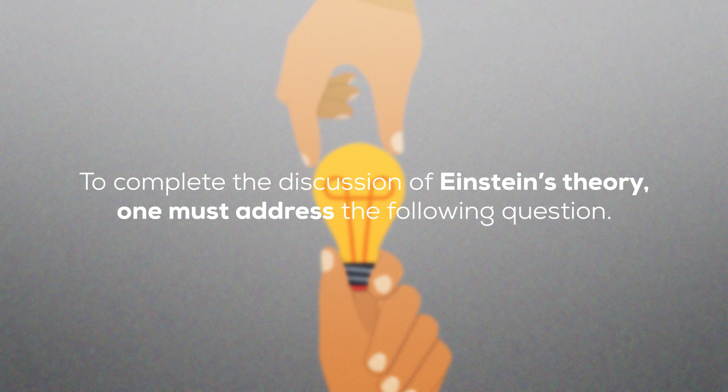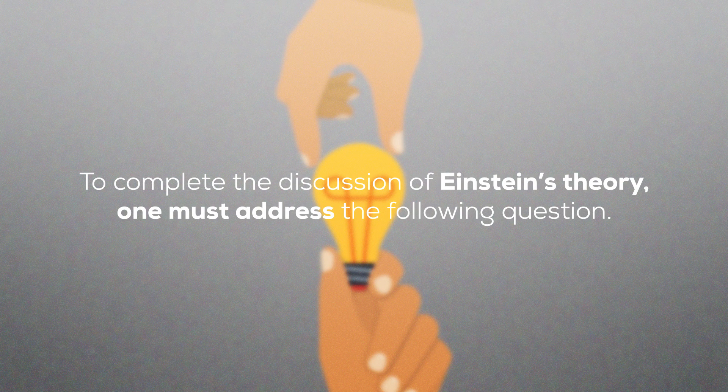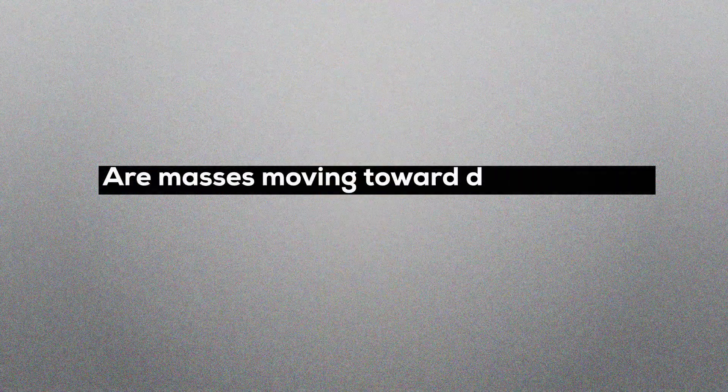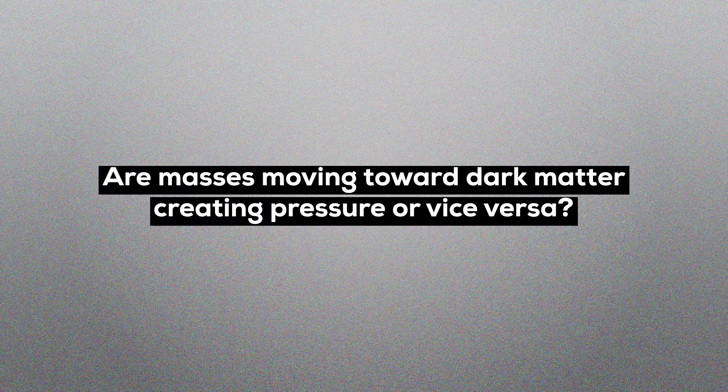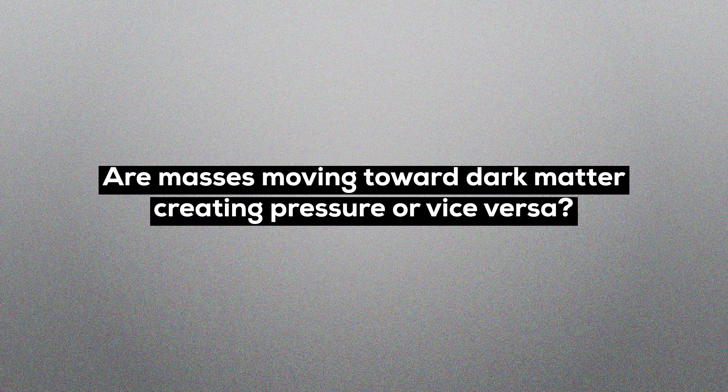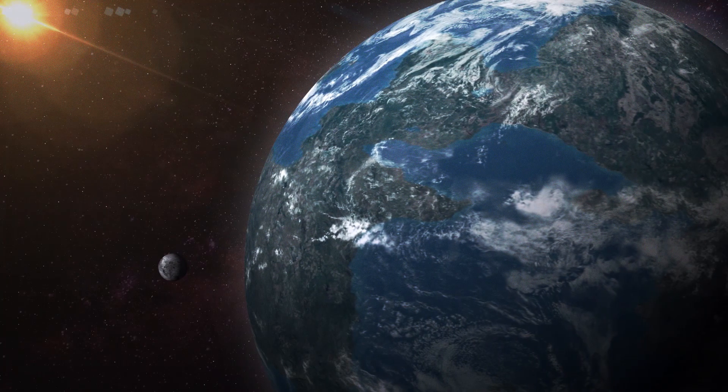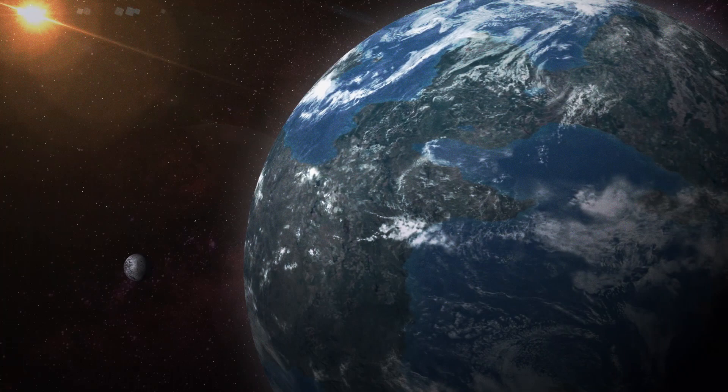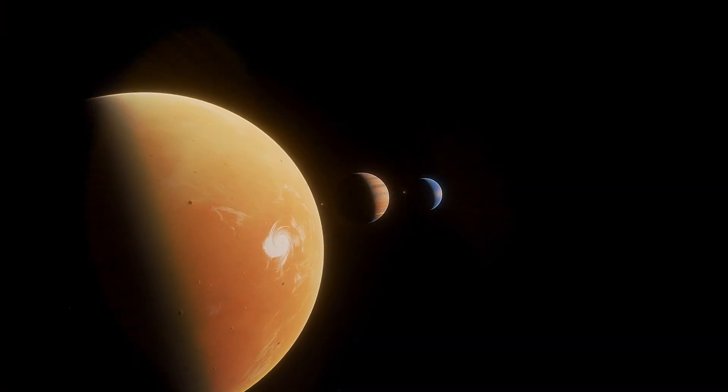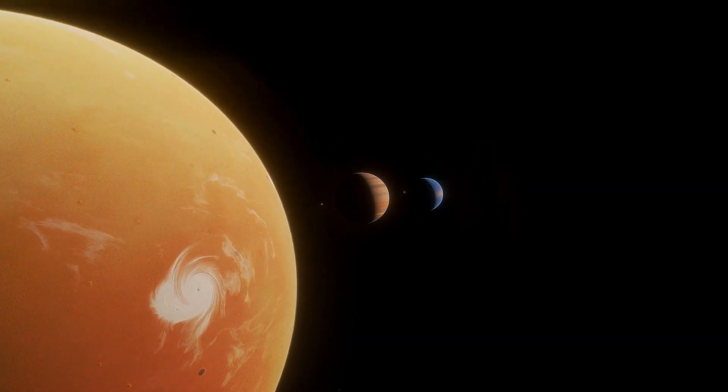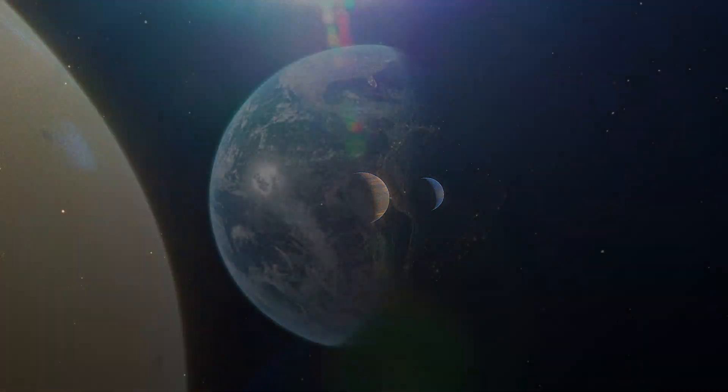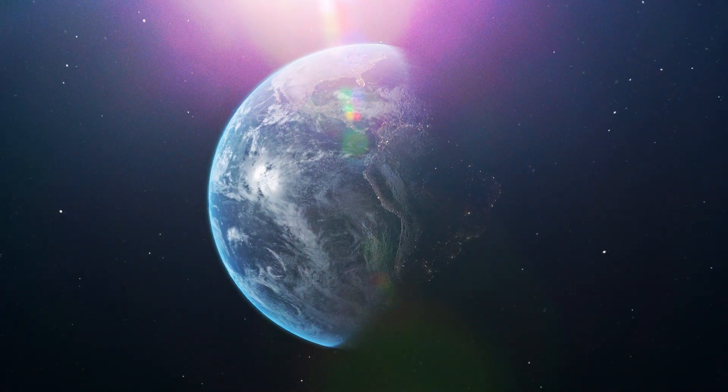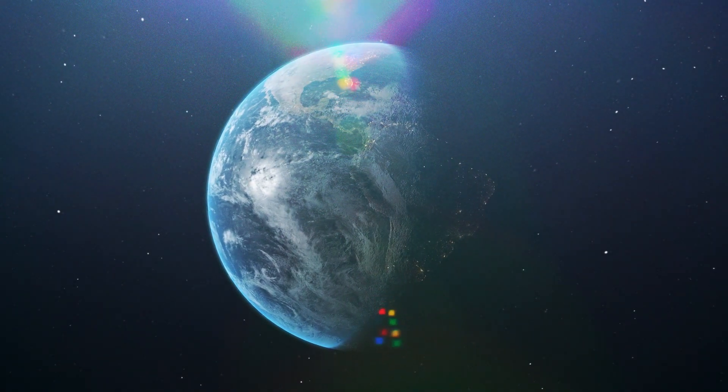To complete the discussion of Einstein's theory, one must address the following question. Are masses moving toward dark matter creating pressure or vice versa? The Earth and all celestial bodies have no natural self-powering systems to generate any motion by themselves. Only dark matter moves and is responsible for the movement of most things in the universe. Stars and planets, Earth included, are moving along the streams of DM that carry them.